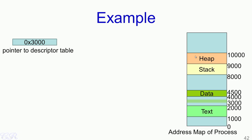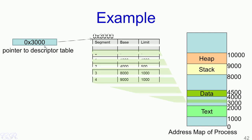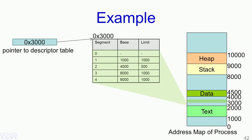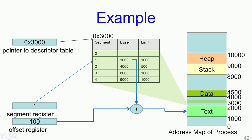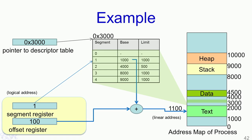Let us look at the mapping done in segmentation with an example. Let us say the register containing the pointer to the descriptor table has a value of 3000. This means that at address 3000 in RAM there is a descriptor table which contains the mapping for the various segments. Now let us say the segment register has a value of 1, meaning we are trying to use the segment at offset 1 in the descriptor table. The memory management unit would take the base address corresponding to this offset, which is 1000, and use the offset register value of 100 to get the linear address of 1100. The segment register along with the offset register form what is known as the logical address.